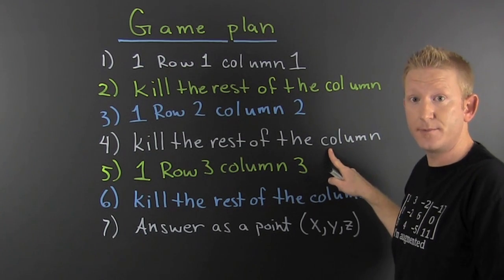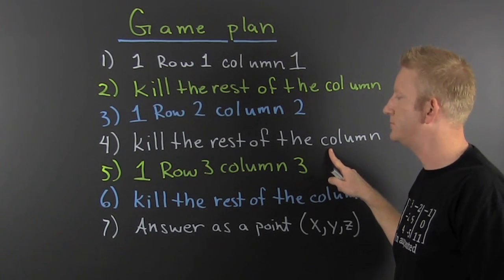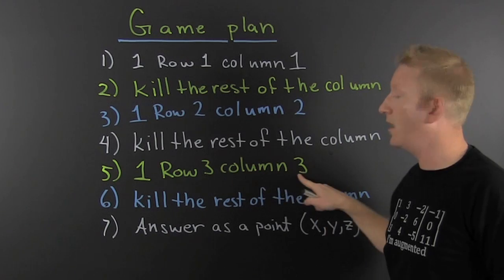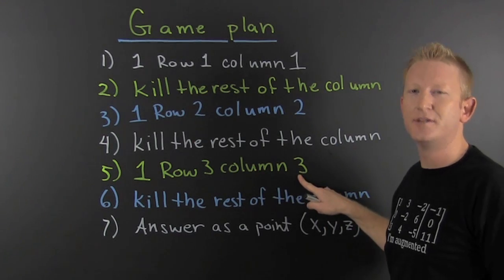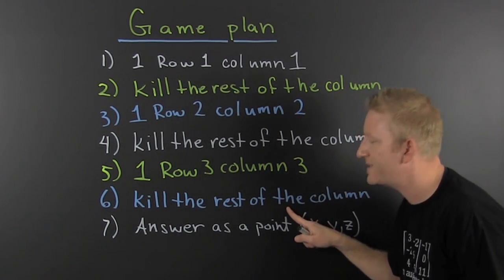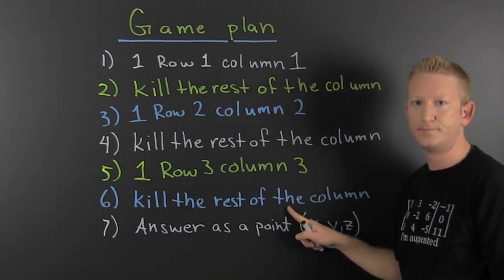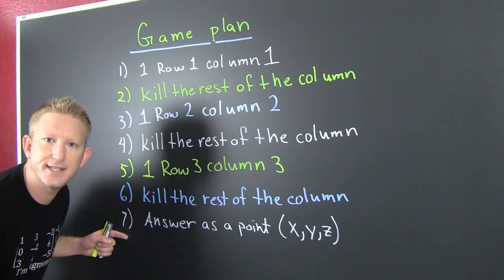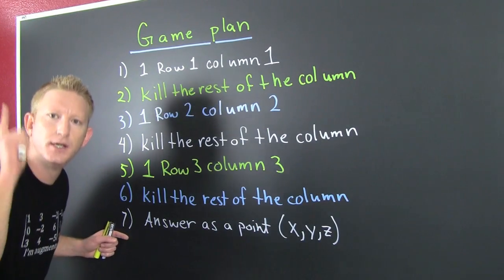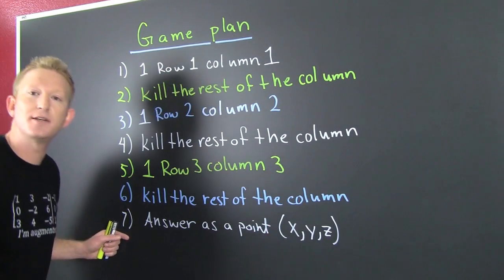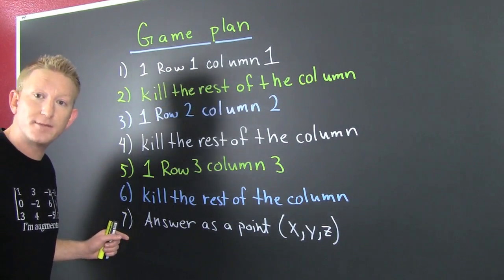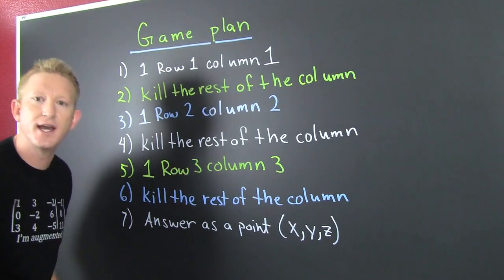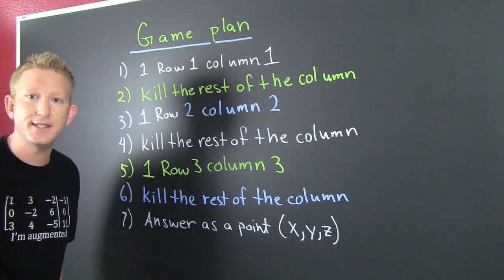Annihilate them. Reduce them down to 0. Then we're going to get a 1 in row 3, column 3, so we can kill the rest of that column. And the last step: the solution to a system is a point. You write your answer as a point — XYZ.